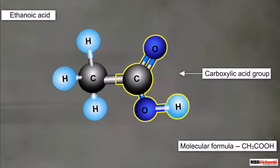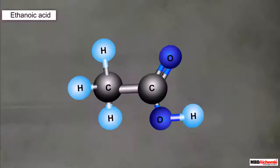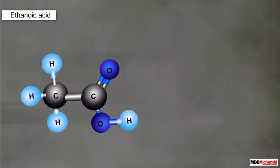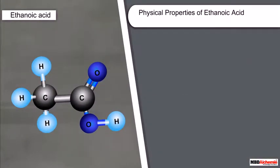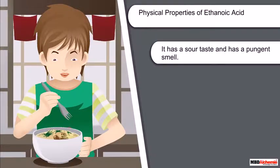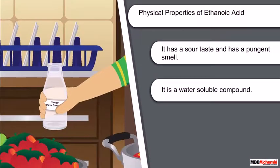Let us now check some important physical properties of ethanoic acid. It has a sour taste and a pungent smell. It is highly soluble in water. All these properties we have already seen while discussing vinegar.